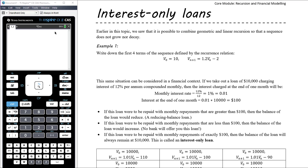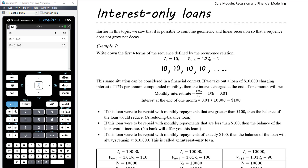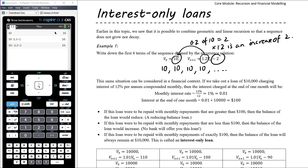For example, if V₀ is 10 and we write down the first four terms in the sequence, the first term is 10. If we multiply by 1.2 and then subtract 2, we still have 10 — so V₁ would be 10. We then again multiply by 1.2 and subtract 2 and we get 10 again. The reason that's happening is because 0.2 of 10 is equal to 2, so multiplying by 1.2 is an increase of 2, and then we subtract 2 and so we're back to 10.